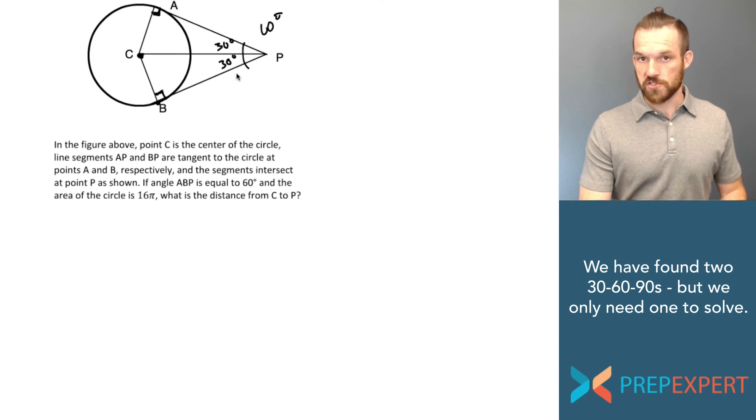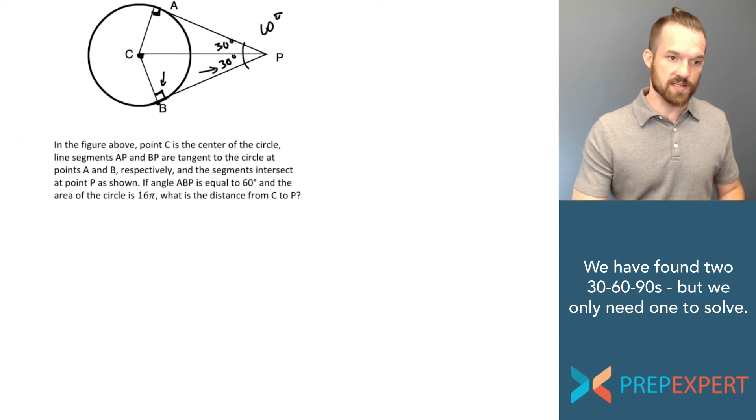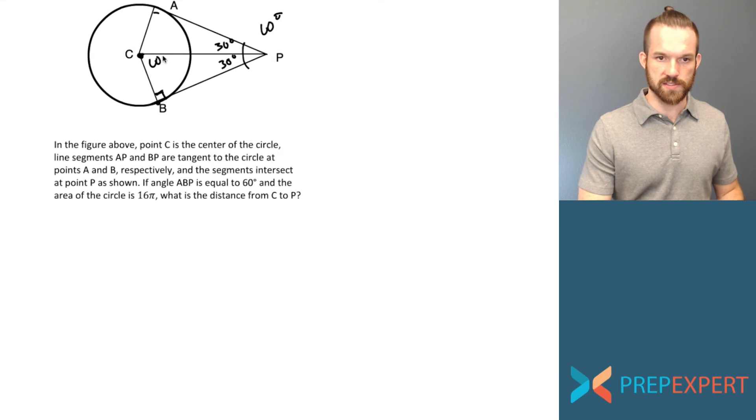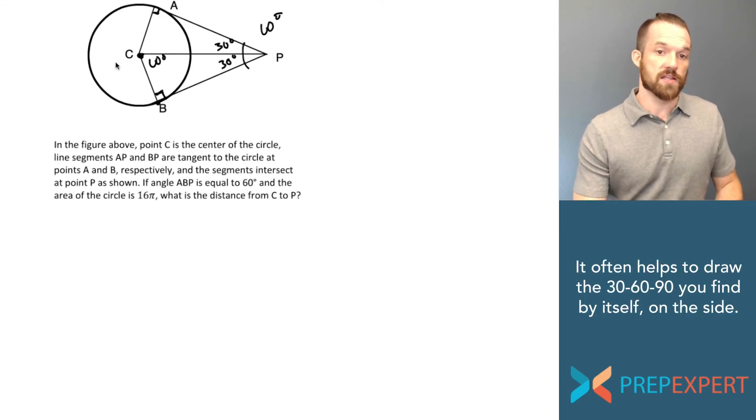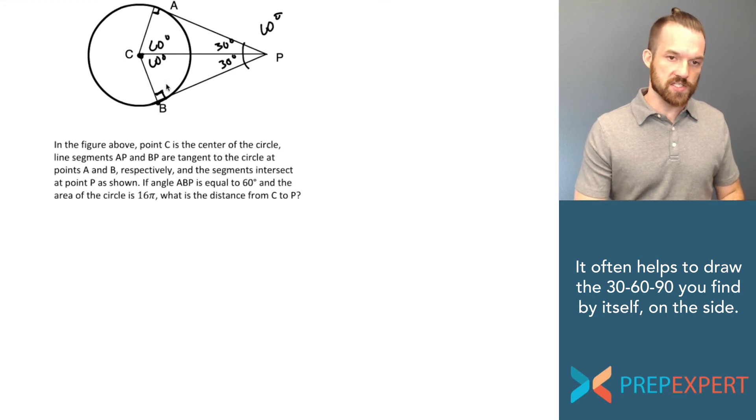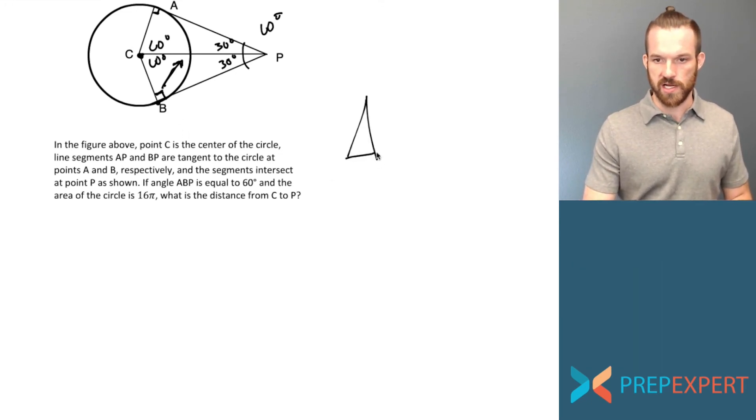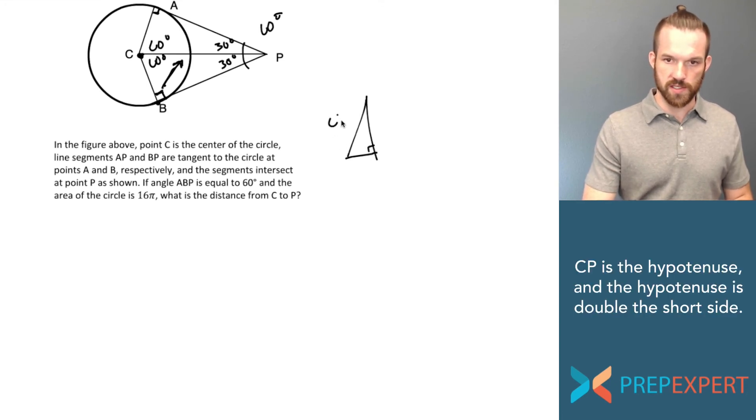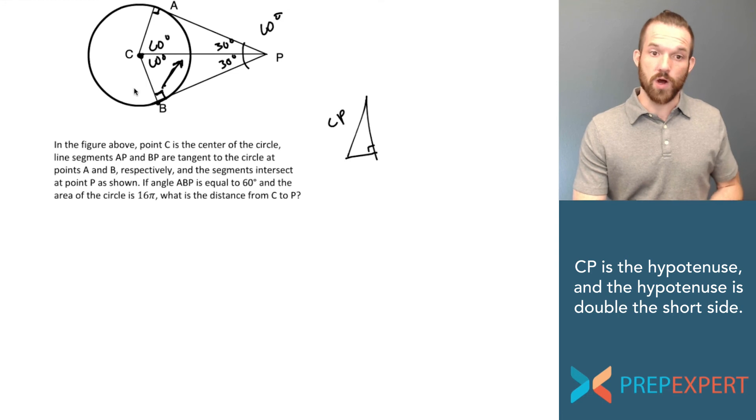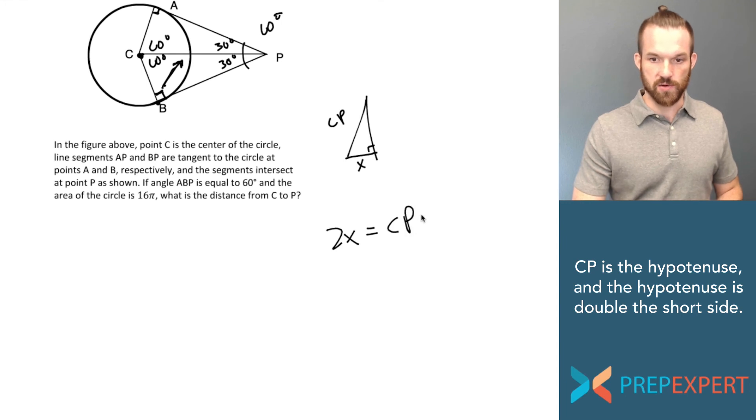All right, so it looks like now we have two 30-60-90 triangles. I know if this angle is 90 and this angle is 30, then this other one has to be 60. The same is true for the other triangle as well. Now let's take a look at what they want us to find: what is the distance from C to P? Looking at my two 30-60-90 triangles, it looks like that line is opposite the 90 degree angle in each triangle, which means in my 30-60-90 triangle it is the hypotenuse, this line CP. So if I can figure out what the short side length is, I'll just double it to find CP.